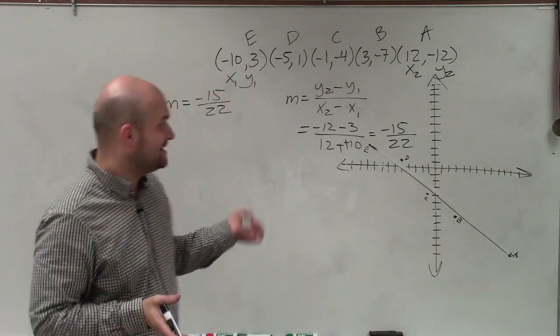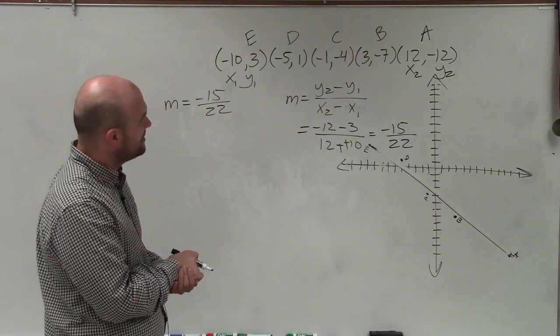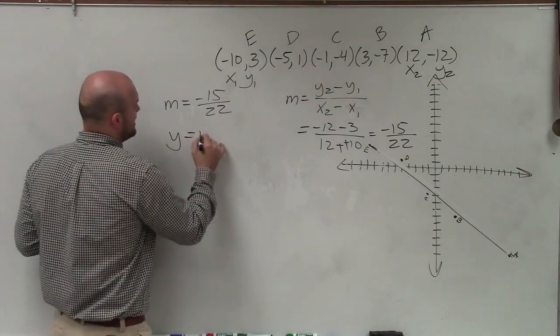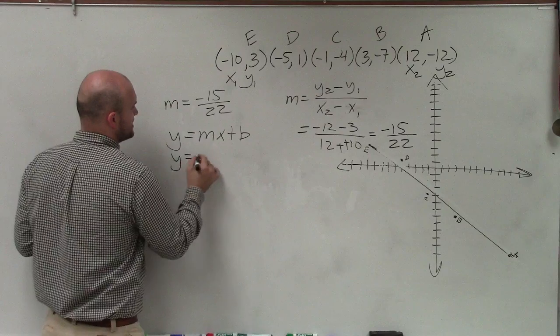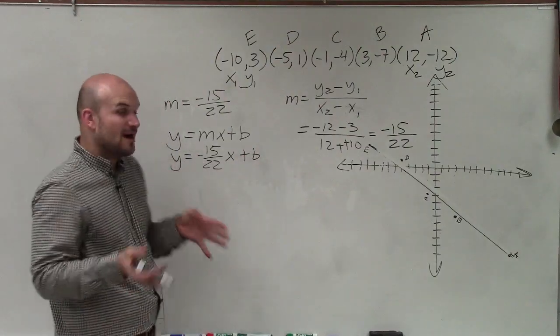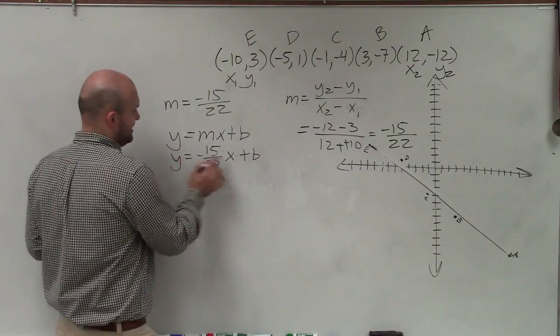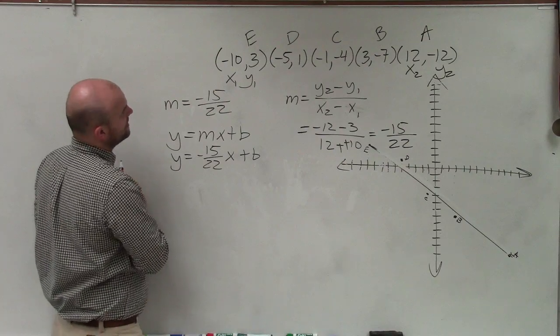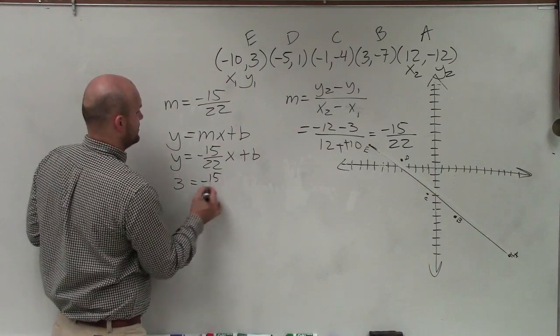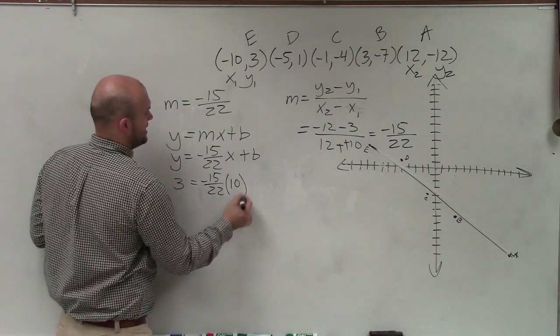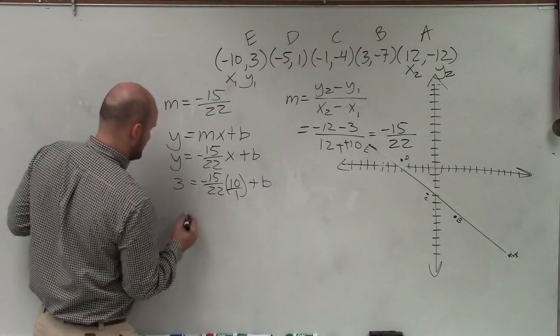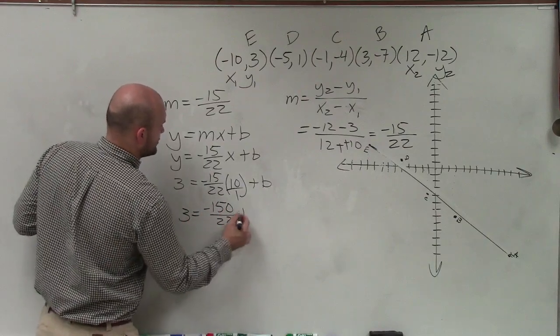Now to determine what my other value is, I need to solve for b. To solve for b, what I'm going to do in this problem is plug in my slope as well as a coordinate point for x and y using slope intercept form. So I have y equals mx plus b. I know what my slope is, which is negative 15 over 22. Now I'm going to plug in the points that I do know that are on my line, which would be negative 10 and 3. So I have 3 in for y, and then I have negative 15 over 22 times negative 10 plus b.